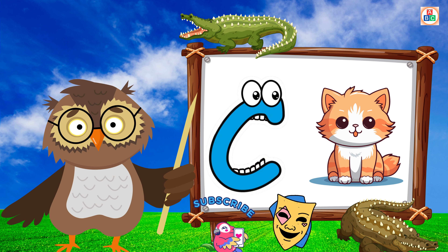M is for Mat. M-M-Mat. N is for Net. N-N-Net. O is for Orange. O-O-Orange. P is for Pet. P-P-Pet.